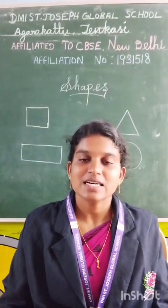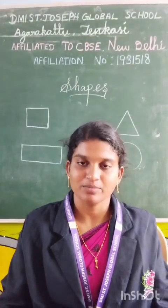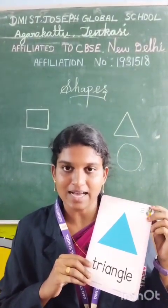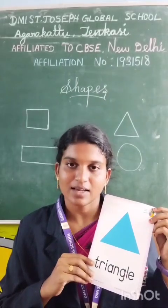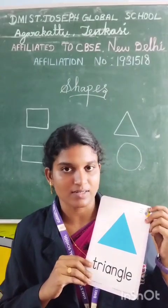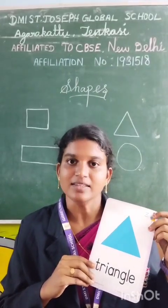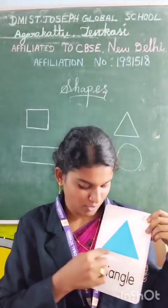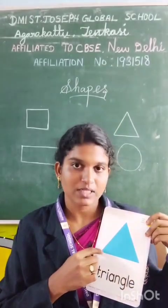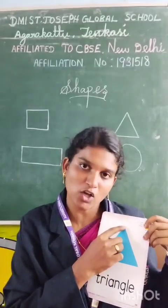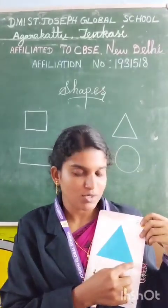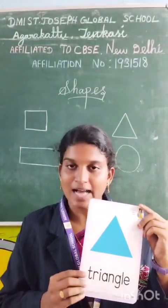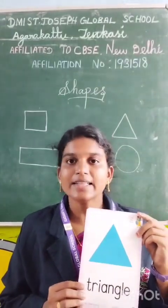Next, I am going to introduce triangle shape. This is triangle shape. Triangle has three sides and three corners. How many sides? Three. Count with me: one, two, three. And three corners. One, two, three. Triangle has three sides and three corners.